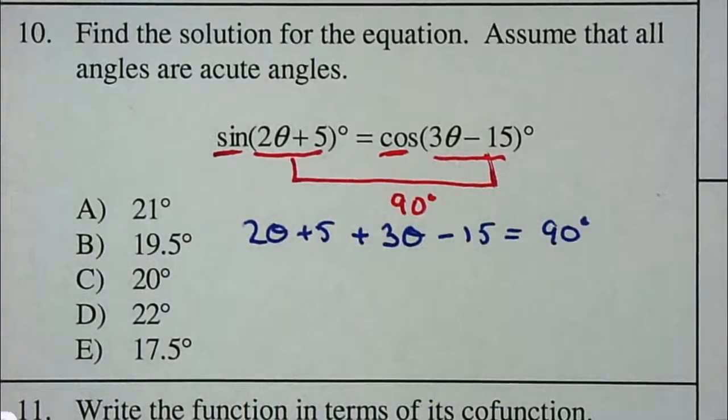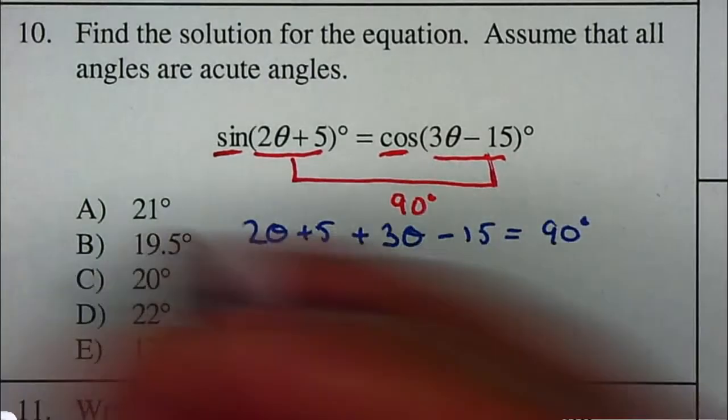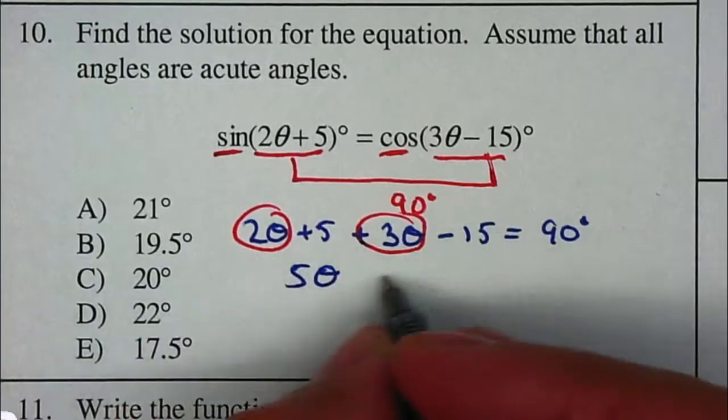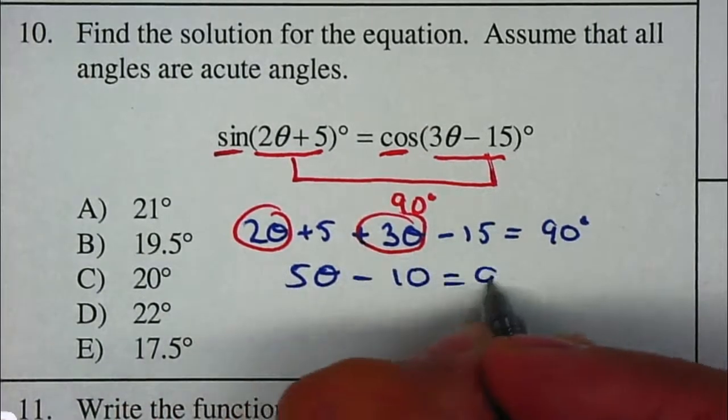So from there I can just go ahead and solve it. I'm going to combine my thetas. That gives me 5 thetas. 5 minus 10 would be giving me a negative 10. It would go to 90.